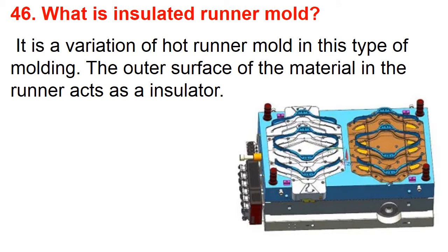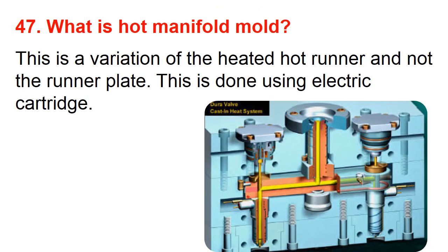The insulated runner mold is a variation of the hot runner mold. In this type of molding, the outer surface of the material in the runner acts as an insulator. Question number forty-seven: What is the hot manifold mold? In this, a variation of the heated hot runner is used, not the runner plate. This is done using electric cartridges.